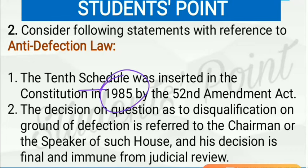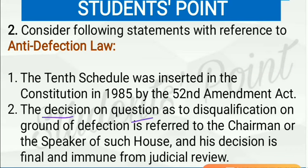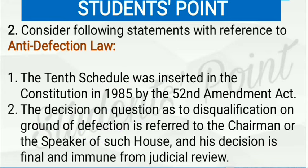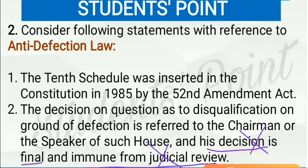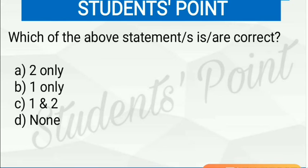The 10th Schedule was inserted in the Constitution in 1985 by the 52nd Amendment Act — this statement is correct. The decision on disqualification on the ground of defection is referred to the chairman or speaker of such house — this part is also correct. However, the statement that the decision is final and immune from judicial review is incorrect, because earlier it used to be immune from judicial review, but later the Supreme Court gave a judgment that decisions of the speaker or chairman are subject to judicial review, and MLAs or MPs affected can move directly to the Supreme Court. So the first statement is right but the second is wrong, making B the correct answer.